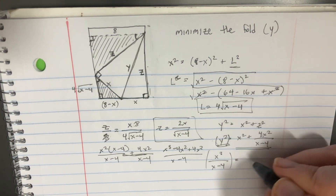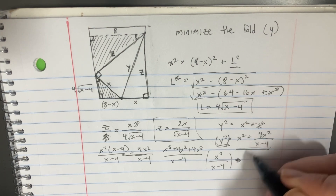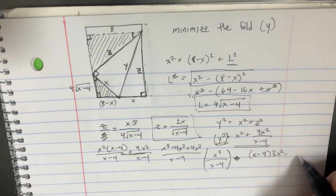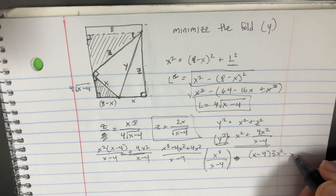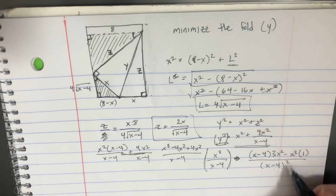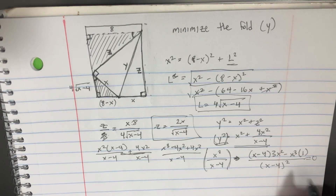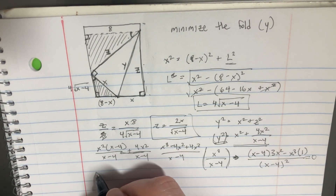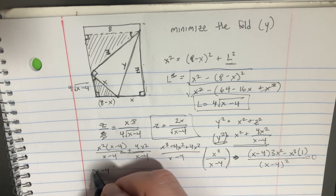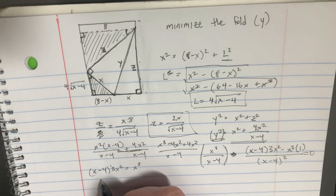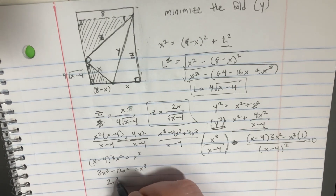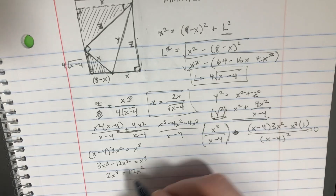And then we can take the derivative here and try to set that equal to 0. So the derivative of this is going to be: (x minus 4) times 3x squared minus x cubed times 1, all divided by (x minus 4) squared. We'll set that equal to 0, which means we don't really care too much about the bottom — it's more going to be the top side. So it's just (x minus 4) times 3x squared equals x cubed, and therefore we get 3x cubed minus 12x squared equals x cubed. So 2x cubed equals 12x squared, and so x equals 6.